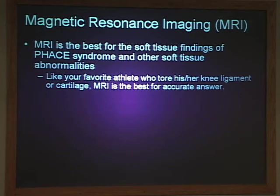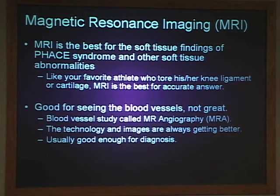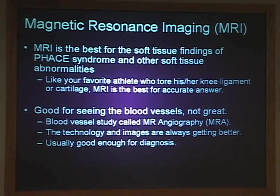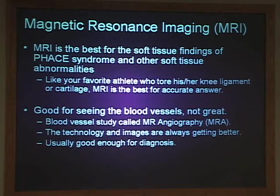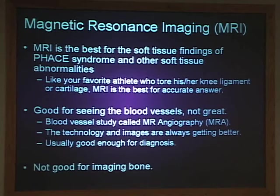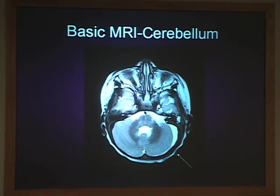MRI is the best for soft tissues — any soft tissue injury or tumor, MRI sees it best. It's good for blood vessels at around 720p resolution, which is good but not great. However, it's more than good enough to see the findings of FACE syndrome. It's terrible for imaging bone, but for FACE syndrome most findings are in soft tissues, not bone. On this MRI image you can see cerebellar hemisphere asymmetry where one side is a little bit smaller than the other, causing extra white fluid on that side.